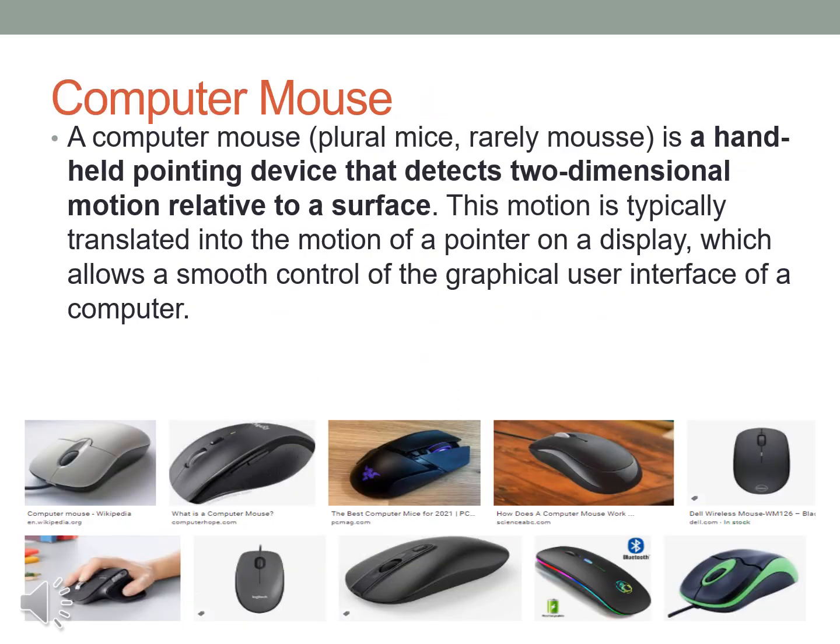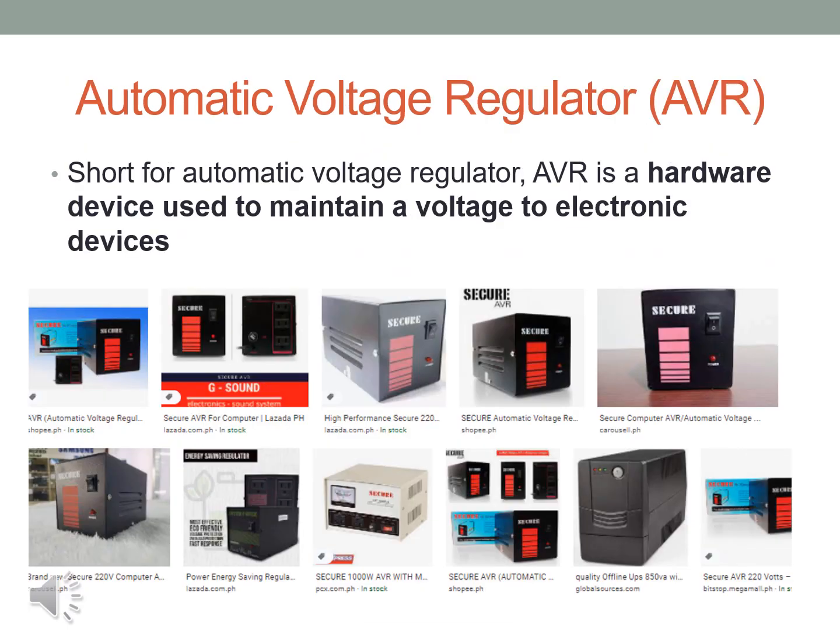A computer mouse (plural mice) is a handheld pointing device that detects dimensional motion relative to a surface. This motion is typically translated into the motion of a pointer on a display, which allows smooth control of the graphical user interface of a computer. Short for Automatic Voltage Regulator, AVR is a hardware device used to maintain a voltage to electronic devices.